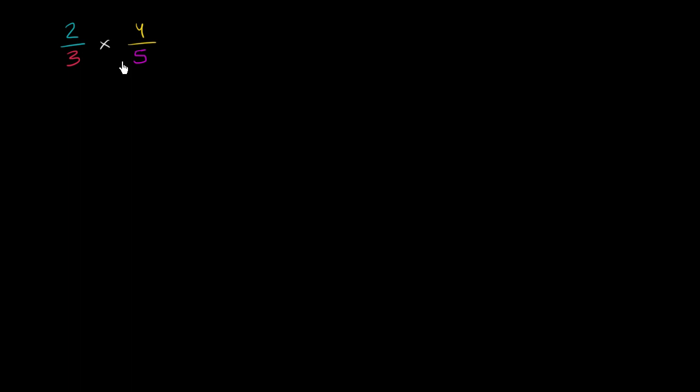In a previous video, we've already seen how we can actually compute this. This is going to be equal to, in the numerator, we just multiply the numerators. So it's going to be 2 times 4. And in the denominator, we just multiply the denominator. So it's going to be 3 times 5. And so the numerator is going to be 8, and the denominator is going to be 15.